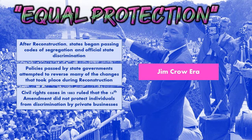Jim Crow laws are policies that are segregation and other forms of official state policy discrimination — like laws about who could own what and things like that. These were trying to reverse the changes that took place during Reconstruction. The 15th Amendment says African-American men have to be able to vote, so state governments in this period put in things like literacy tests and poll taxes that weren't technically racial in their policy, but had the effect of racial discrimination — and that was purposeful. All of these laws reversed a lot of that policy progress.